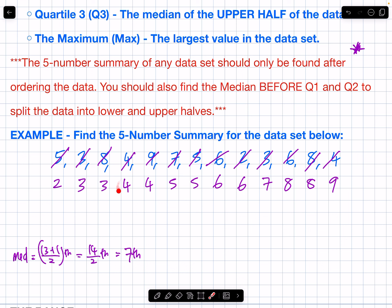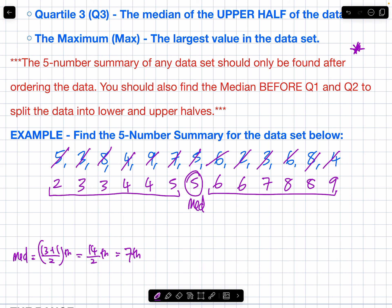Counting to the seventh value: 1, 2, 3, 4, 5, 6 — seven is the median, which equals 5. That's one of the five number summary. The data has now been split into a lower and upper half. When the median is a single number in the middle, the upper half does not include the middle number. If done correctly, there should be the same number of data values in each half.